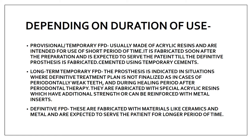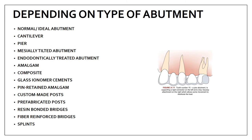The next is depending on the type of abutment. Abutments can be natural present teeth, implants, or tooth roots — they provide primary support to the prosthesis. They can be of various types: normal, cantilever, pier, mesially tilted, or endodontically treated abutment. The abutment can also be amalgam or composite filled, or glass ionomer cement pin-retained amalgam. I will make a separate video on the various types of abutments.